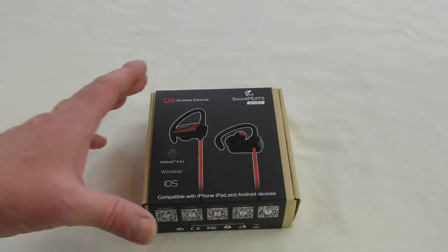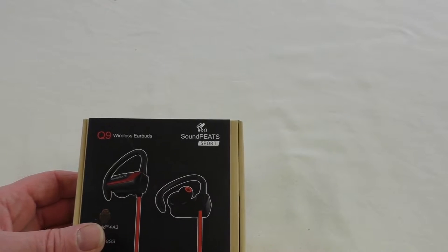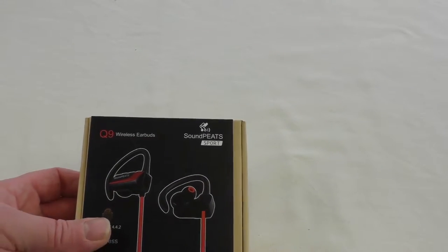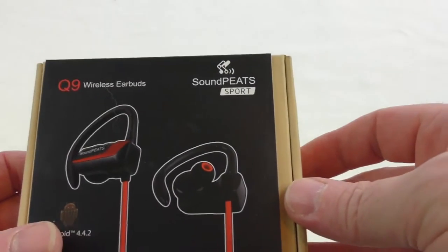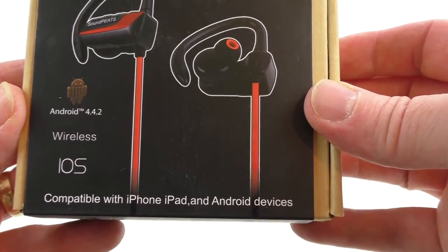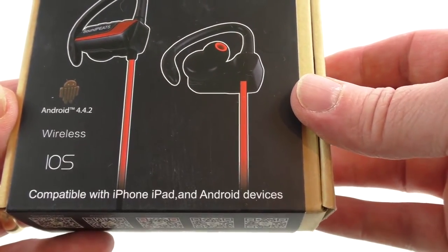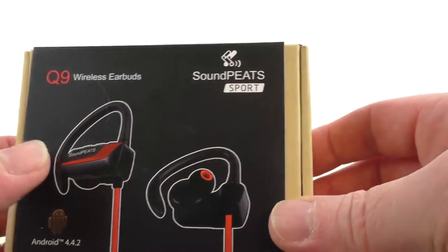All right guys, it's Bob here and we've got an unboxing of a product from SoundPEATS. These are one of their newest wireless earbud systems, called the Q9. It's compatible with Android, iOS, iPhone, iPad, and Android devices, and you've got a picture of the device there.